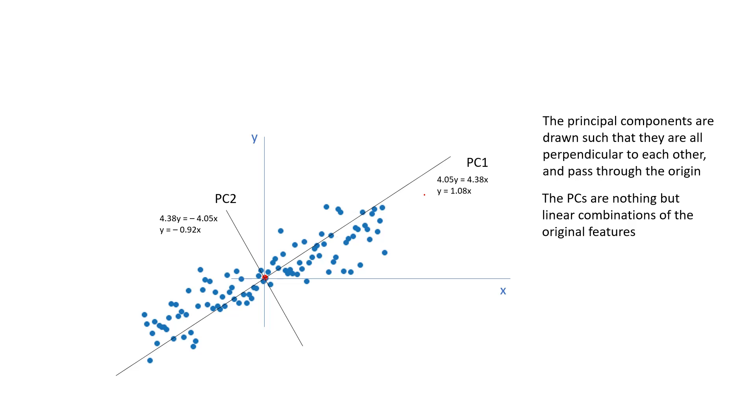And it is a linear combination of x and y, these two features. If we have 5 different features, we would have 5 different principal components. And all will be perpendicular to each other, which will also solve the problem of multicollinearity. Because since all of them are at right angles to each other, they will all be linearly independent.